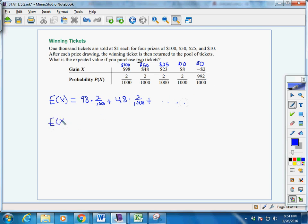Again, I like the second way a little bit better, where we think of our original values. We think of 100 times 2 out of 1,000, because again, where is that 2 coming from? We purchased 2 tickets.